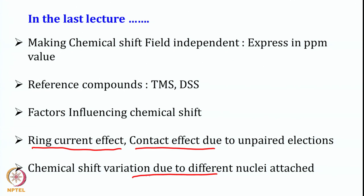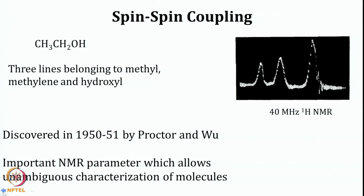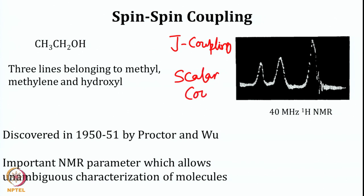So now from here we will move forward and start looking at another very crucial parameter called spin-spin coupling, also called J coupling or scalar coupling. It is called scalar coupling because it does not depend upon orientation.